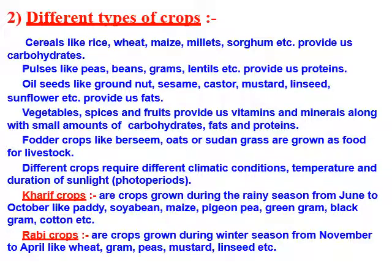Oil seeds like groundnut, sesame, castor oil, mustard, linseed, and sunflower all give oil and are the source of fat. Vegetables, spices and fruits provide us essential vitamins and minerals, along with a small amount of carbohydrate, fat and proteins. Some crops like barseem, oats, and sudangrass are grown as fodder crops for livestock like goat, buffalo, and cow. Different crops require different climatic conditions, temperature and duration of sunlight, also known as photoperiods.